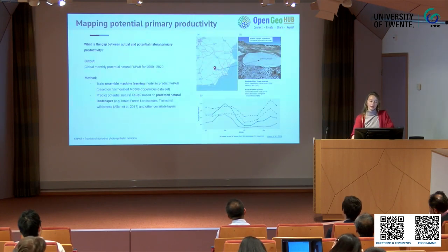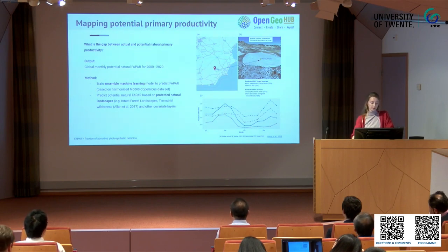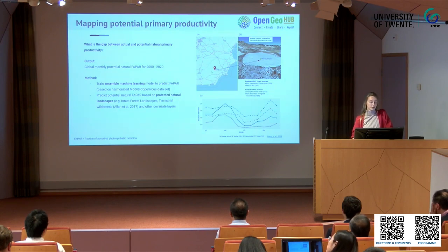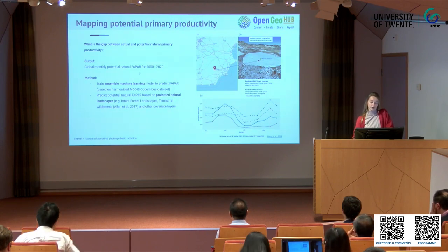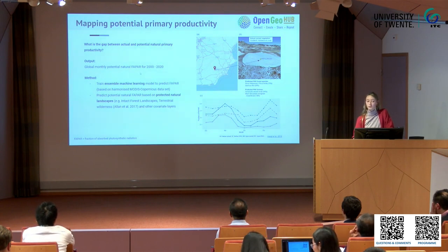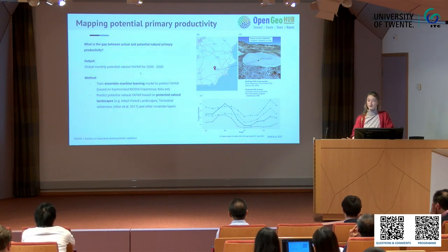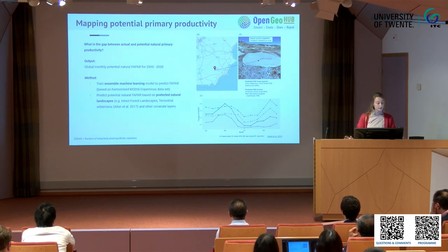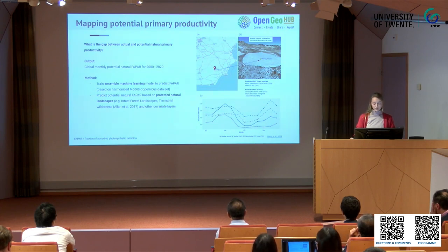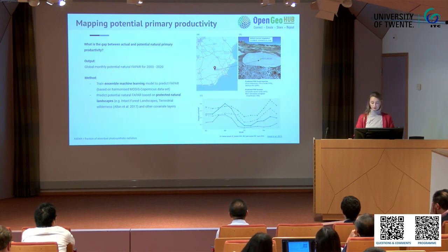One of my goals for this research is to model potential primary productivity. Primary productivity is basically the amount of carbon assimilated by plants, and it can be represented by FAPAR — the fraction of absorbed photosynthetic radiation. We want to model the gap between actual and potential natural primary productivity. The idea is to train a machine learning model and to use protected natural areas as training points for that.